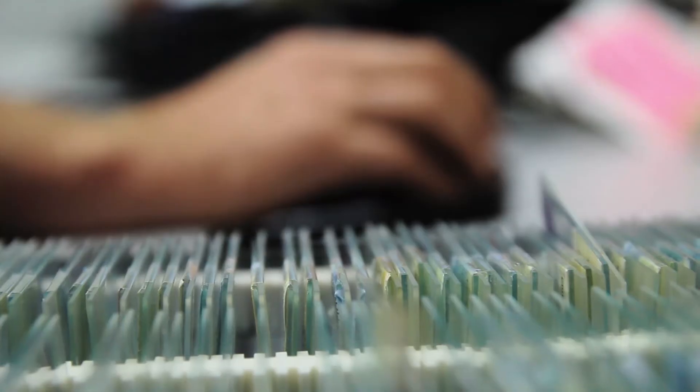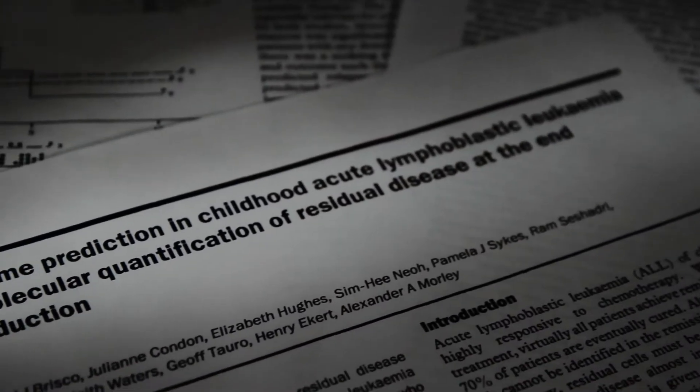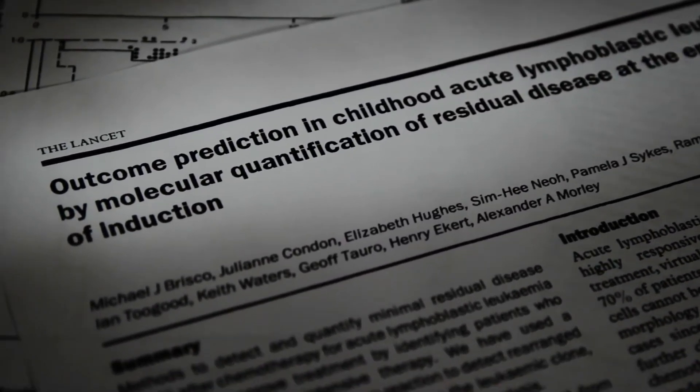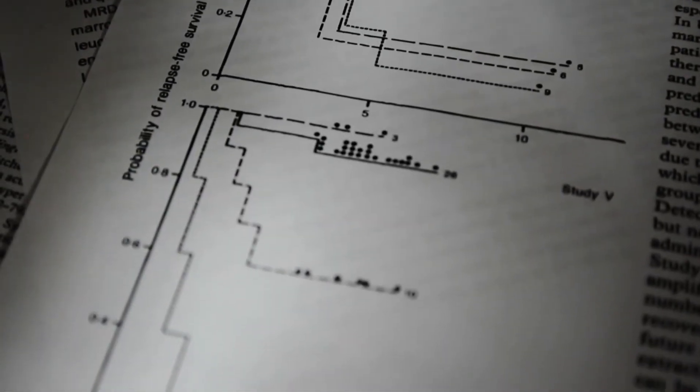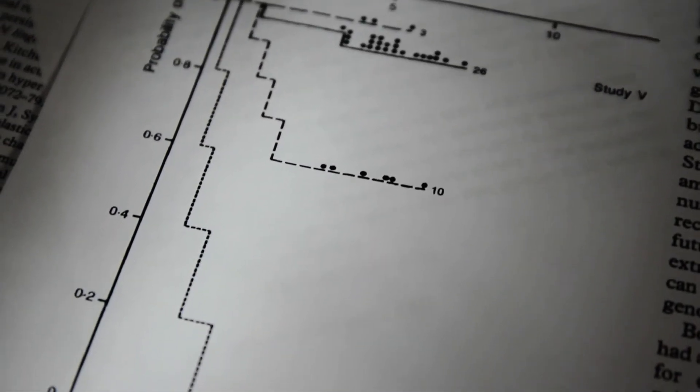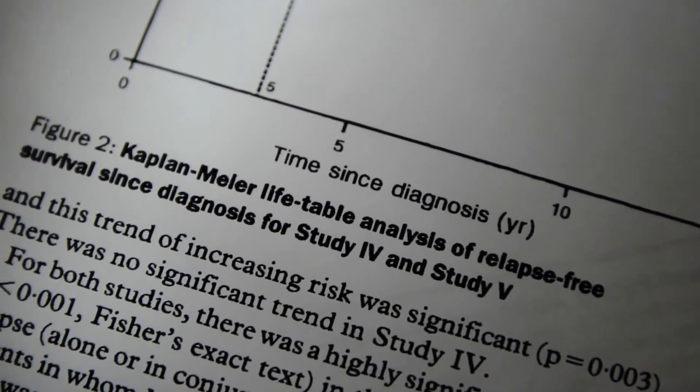We did one quite important study, which was published in 1994 in The Lancet, in which we were able to predict outcome of patients of children with acute lymphoblastic leukaemia by looking at the bone marrow after one month of treatment. At the education session of the American Society of Haematology a year or two later, the person who was giving the education session said that if this is confirmed, it's going to change the way we treat leukaemia. And it was confirmed.